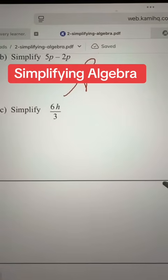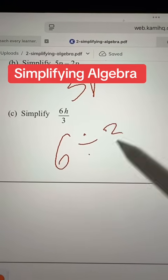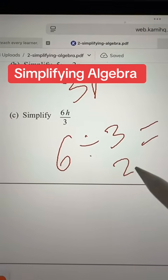Then you have 6h divided by 3, so it basically means 6 divided by 3, that is 2h.